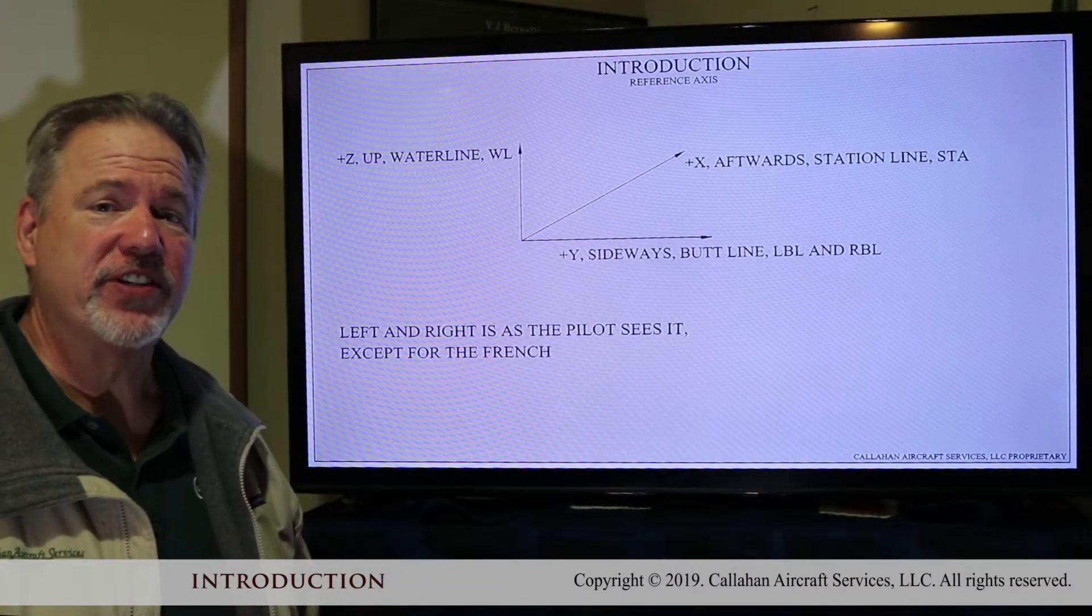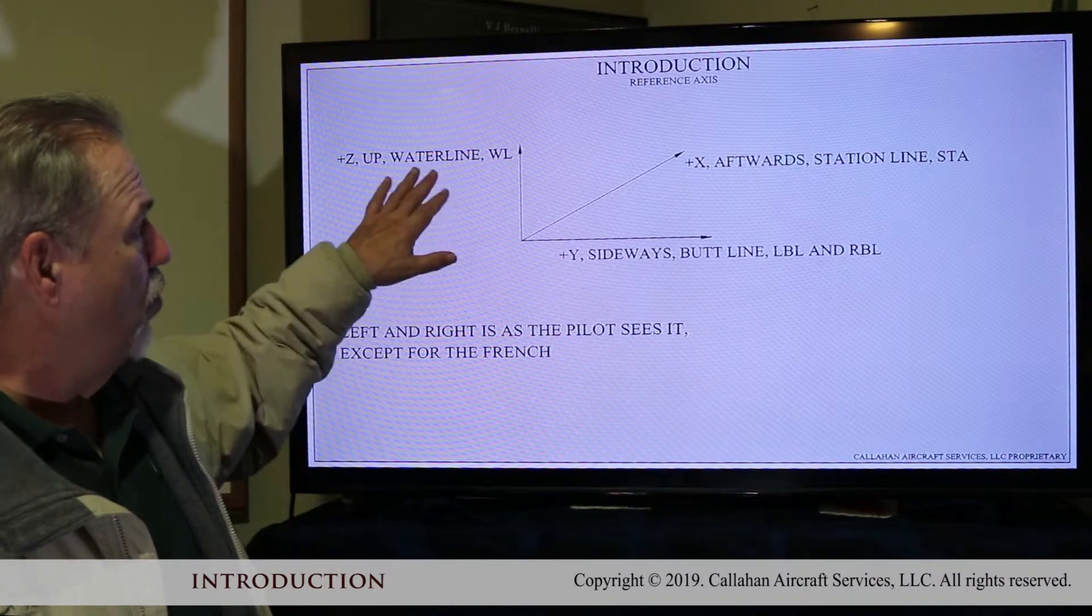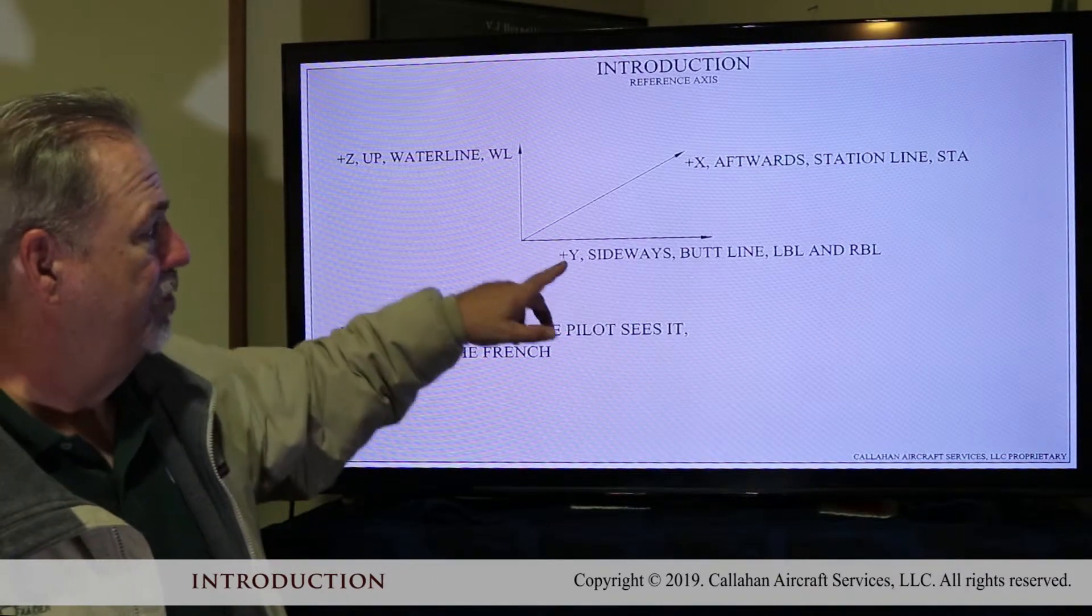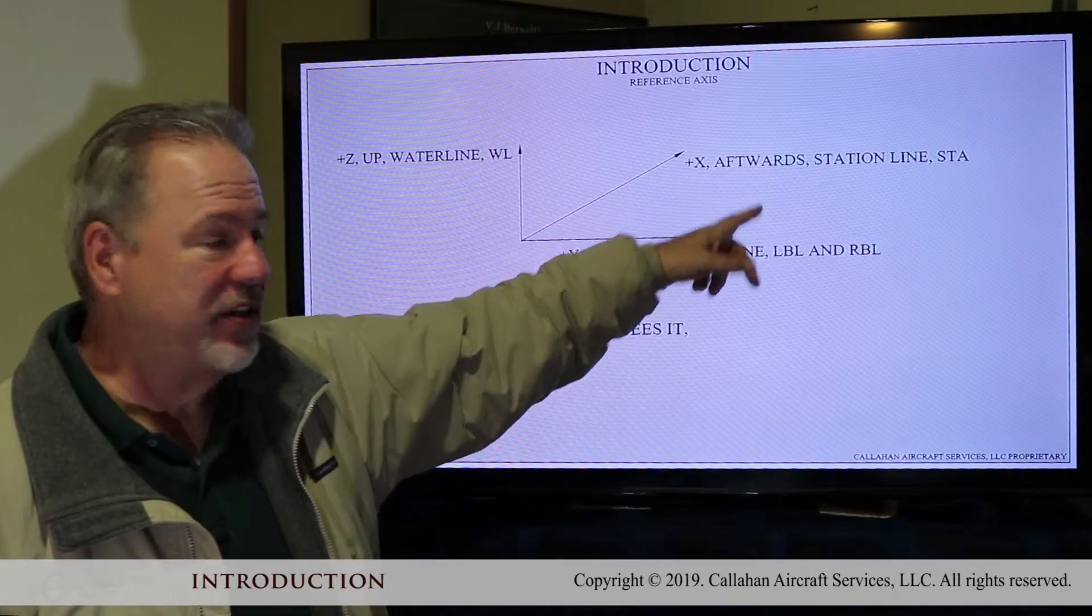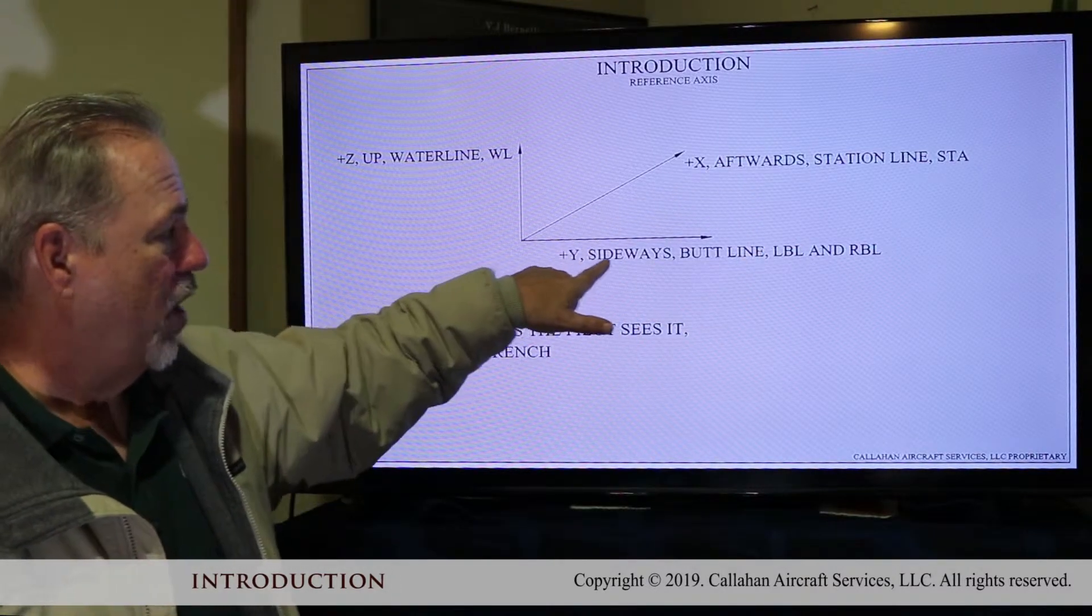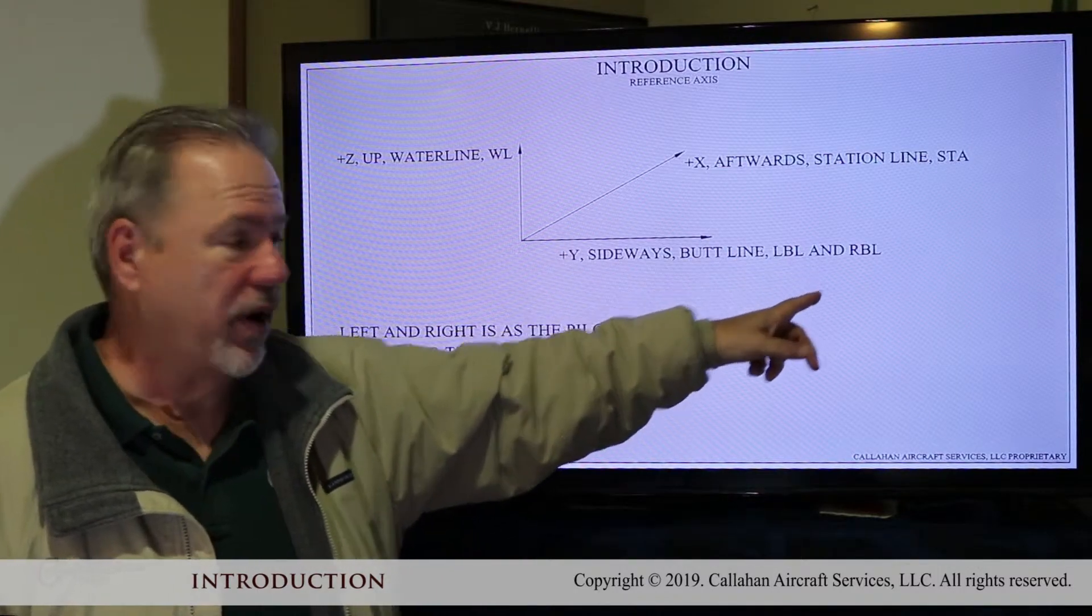We continue with the reference axis. So you have water line, which is up, called the Z axis. X is aft. Y, positive Y is sideways, but you have two positives, one left, one right.